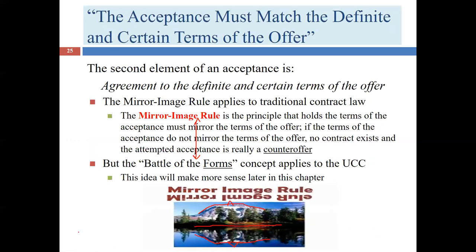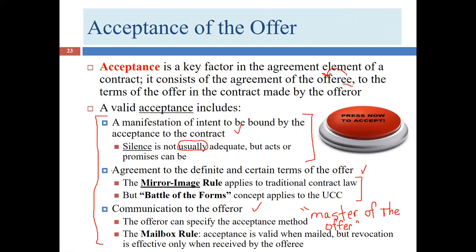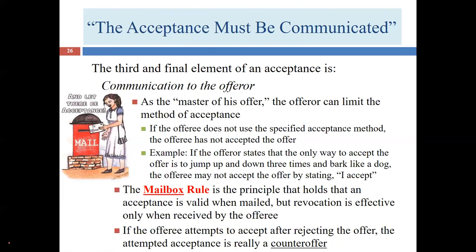We've now completed the second element of acceptance and are moving to the third: communication to the offeror. The offeror has to communicate the offer to the offeree, and if the offeree wants to accept, he or she must communicate that back to the offeror. For example, if Bob says 'I accept' while his head is turned away and I rely on lip-reading but can't see his lips, he hasn't successfully communicated acceptance, even though he said the right words.